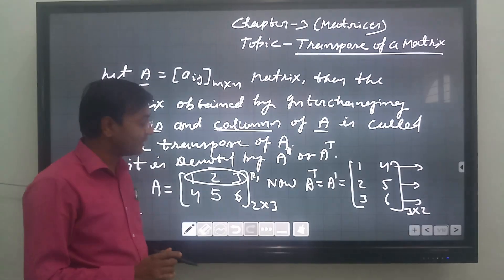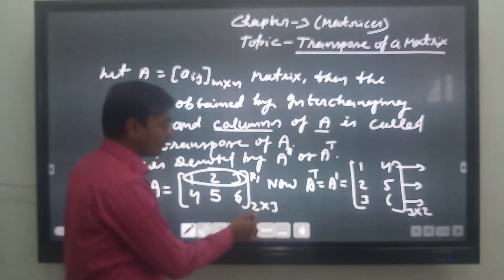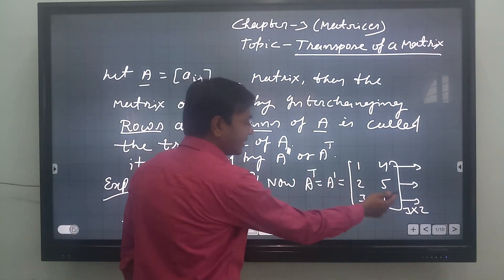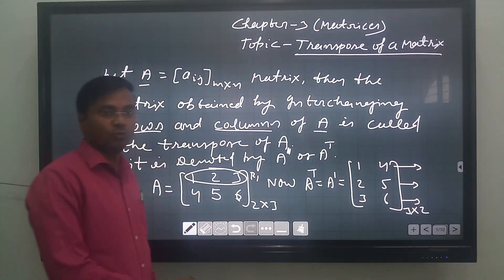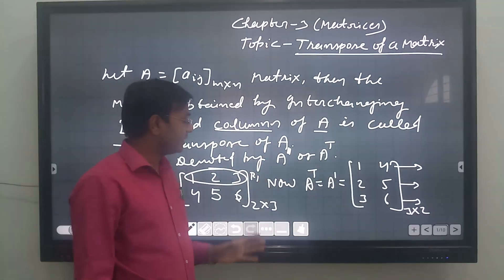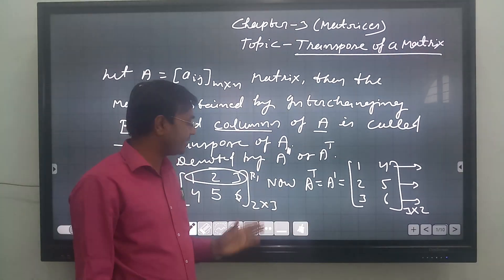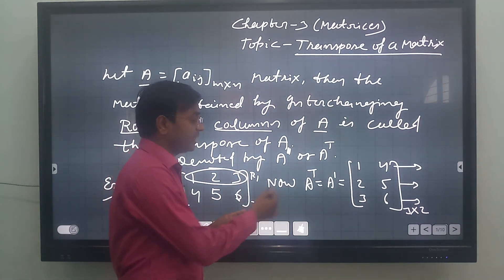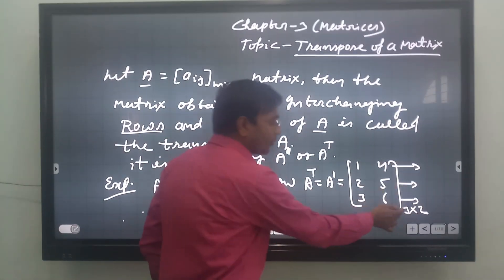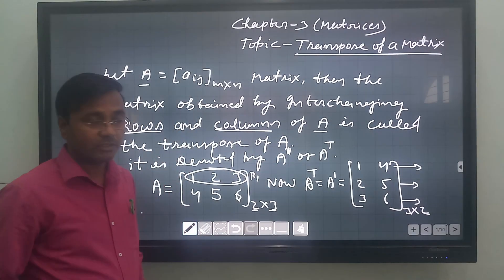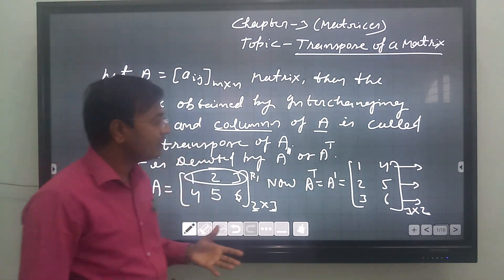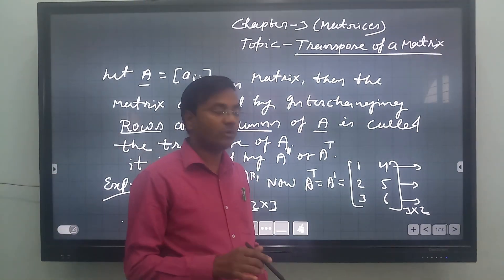It is observed that the given matrix had order 2×3, and after transposing, the order gets reversed to 3×2. This means while finding the transpose of any matrix, the order gets reversed — rows are converted into columns and columns into rows. So the concept is clear: transpose is simply the interchanging of rows into columns.